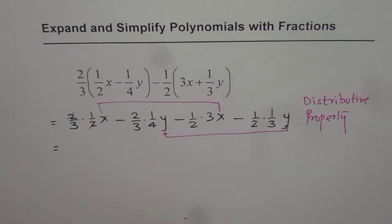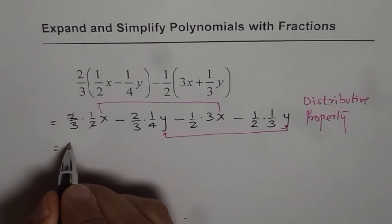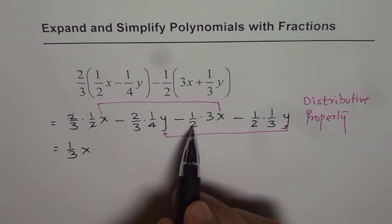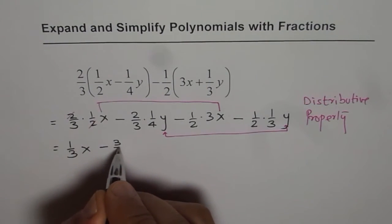2 divided by 2 is 1, so we are left with one-third of x, and this x term is 3 over 2, we get minus 3 over 2x.